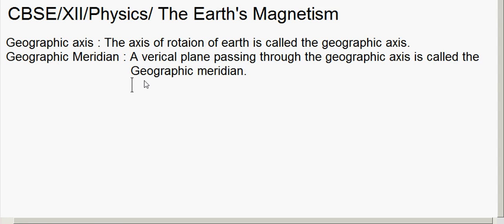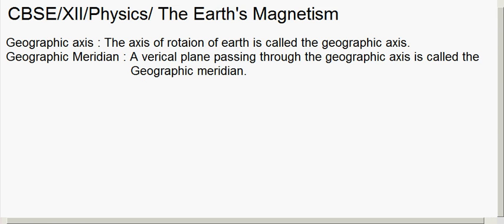The geographic axis is the axis with respect to which the Earth rotates. If you consider a vertical plane passing through the geographic axis, we call it the geographic meridian. In the figure, this line represents the geographic axis, and the geographic meridian is a vertical plane passing through it.